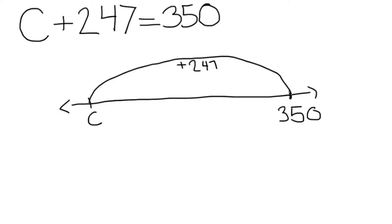While you're jumping back, you don't have to jump 247 at once. You can first jump 200 to the left. You should land on 150. Next, jump 40 to the left. You will be on 110. Finally jump 7 to the left. You will be left with a difference of 103.